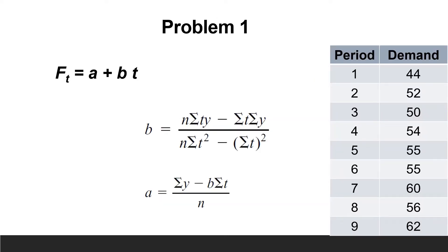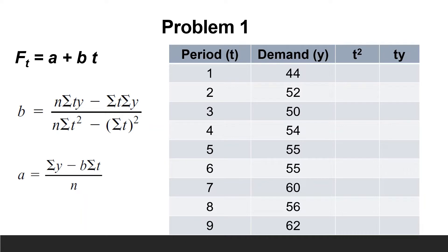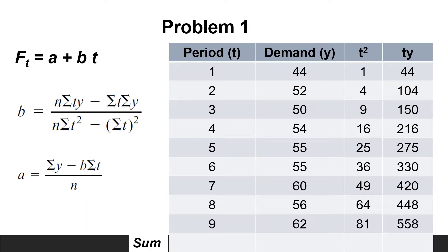To develop the linear trend in the form f(t) = a + bt, we have to find a and b using these two equations. To do this, two more columns should be added to the table: one contains t squared and the other contains t multiplied by y. Calculate t squared and t multiplied by y for each period, then add a new row at the bottom containing the summation of each column.